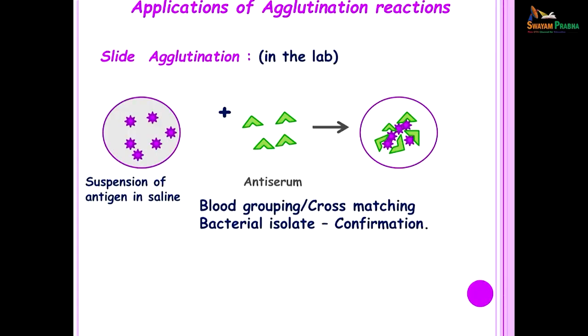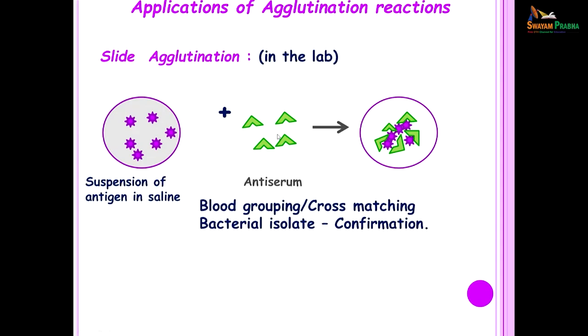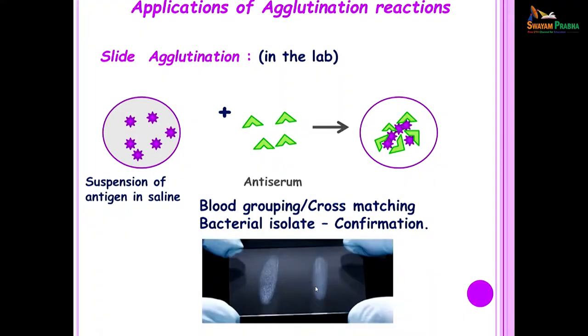Agglutination reactions are reactions when a particulate antigen is mixed with its antibody in the presence of an appropriate electrolyte at a suitable temperature and pH. When this happens the particles are clumped or agglutinated, which can be seen visibly. In the laboratory we use the slide agglutination test which confirms the diagnosis of a particular organism. What we do is when we culture a particular organism we emulsify the growth in saline. This organism carries the antigen; to this we add anti-serum, gently rotate the slide, and within a few minutes we will see clumps. This test is also used in blood grouping and cross matching.